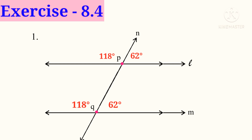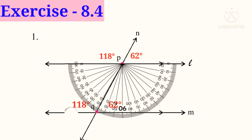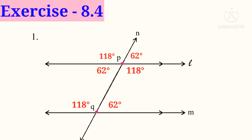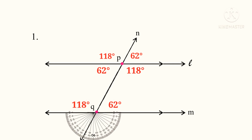Now for the below angles, place the protractor so that the base line coincides with line L at center point P. Observe the left side angle on the lower scale: 0, 10, 20, and so on — 60 after 2 lines, that is 62 degrees. Right side angle on the upper scale — 110 after 8 lines, that is 118 degrees. Similarly, place the protractor on line M at center point Q: left side angle is 62 degrees and right side angle is 118 degrees.